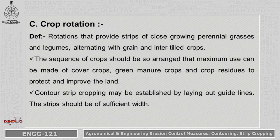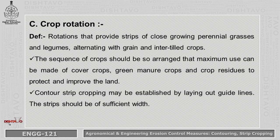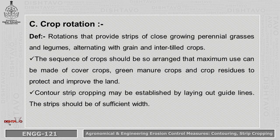The next agronomical practice is Crop Rotation. Rotations provide strips of close-growing perennial grasses and legumes alternating with grain and inter-tilled crops. The sequence of crops should be arranged so that maximum use can be made of cover crops, green manure crops like daincha, and crop residues to protect and improve the land. The strips should be of sufficient width and contour lines are drawn using instruments like a marker.